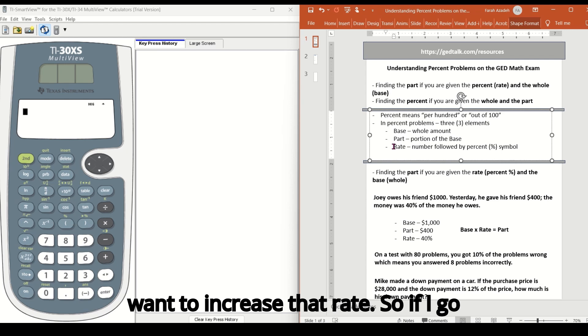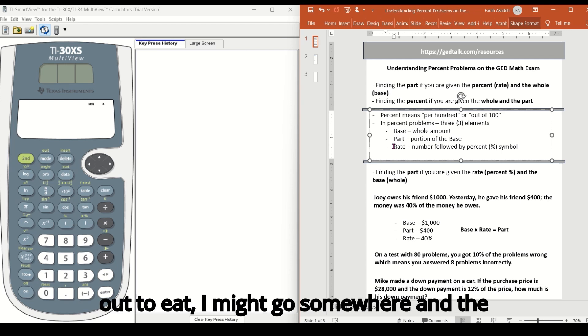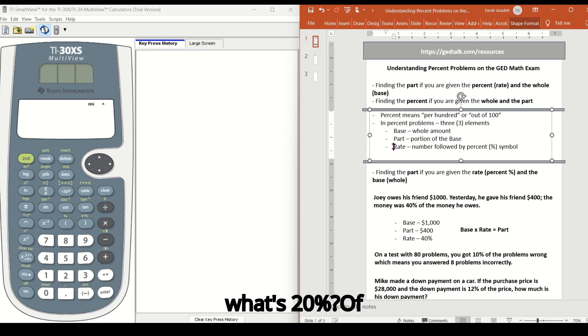You got a boost in your paycheck and you want to increase that rate. So if I go out to eat, I might go somewhere and the bill is $50. I'll think to myself, what's 20% of $50 and whatever that amount is, that will be the part.